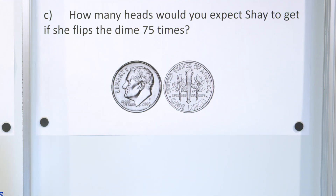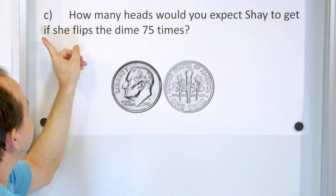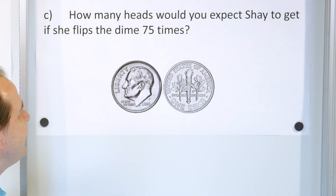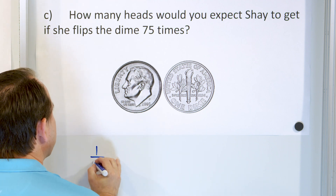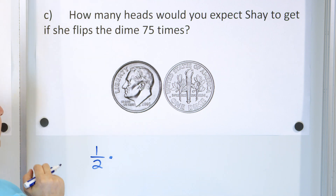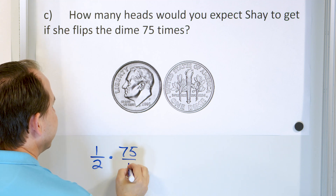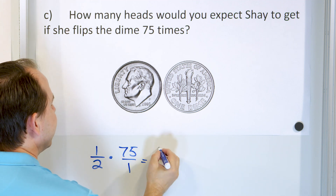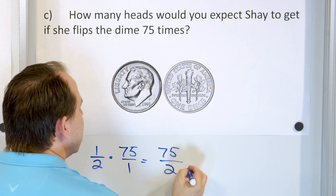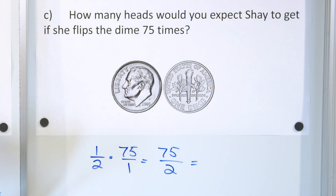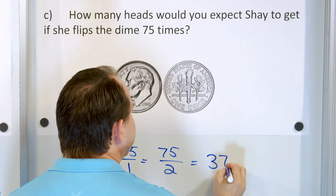Now let's look at the next problem: how many heads would Shea expect if she flips the coin 75 times? The probability is one half, multiplied by 75, written as 75 over 1. One times 75 is 75, and 2 times 1 is 2. When you divide 75 by 2 using long division, you get 37.5.